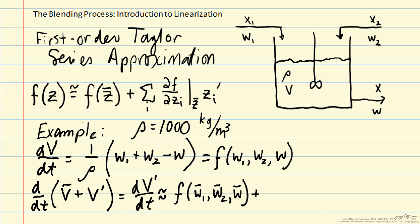So we can start off evaluating f at our steady-state value. Then we can add on these derivative terms. First, we differentiate f with respect to w1, so that is 1 over rho, and then we multiply that by w1 prime. We can do the same, df dw2, again 1 over rho times w2 prime. And finally, 1 over rho, because we have the negative sign on w, times w prime.